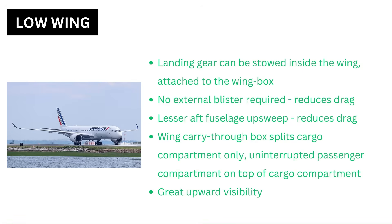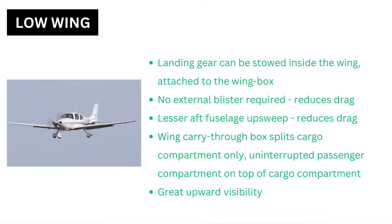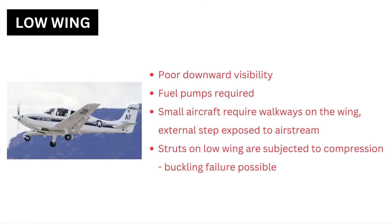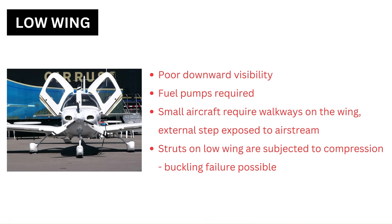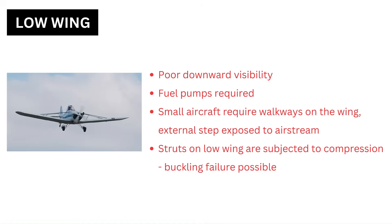The passenger compartment is on top of the cargo compartment and remains uninterrupted. The upward visibility is great in low-wing designs. However, the downward visibility is poor in this design. Fuel pumps are required in this type. Small aircraft with low wings require a reinforced walkway on the wing and an external step that usually remains exposed to the airstream. In a high-wing design, struts are subjected to tension forces in normal flight, whereas struts on low-wing aircraft would be in compression, exposing them to a buckling failure.